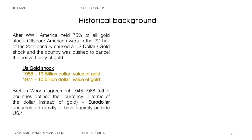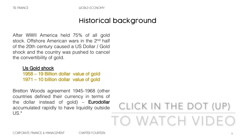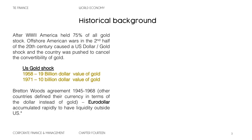The Bretton Woods Agreement from 1945 started to dismantle around 1968 and officially ended in 1971 when it was announced. Other countries in the Bretton Woods Agreement defined their currency in terms of the dollar instead of gold, basically because the United States held 75% of gold, so the dollar was as good as gold. That's where the eurodollar accumulated rapidly to have liquidity outside the U.S. — these are U.S. dollar deposits around the world. Europe needed liquidity to restore from World War II.